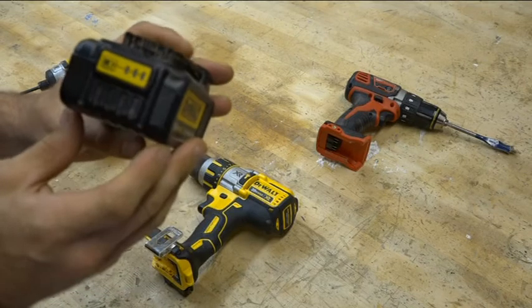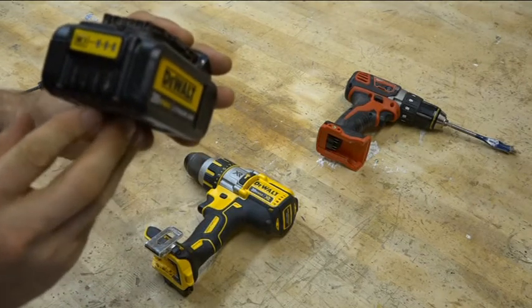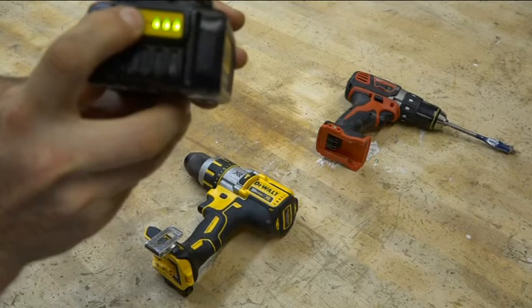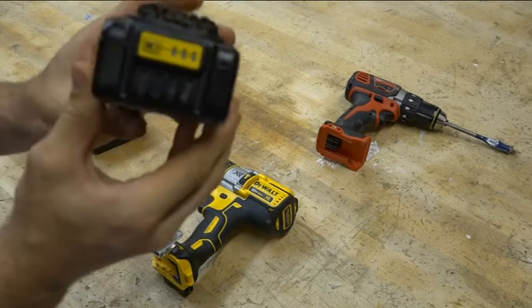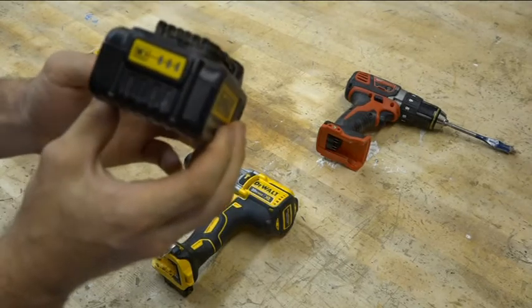Newer batteries will also have an indicator that tells how charged the battery is. Try not to let the battery sit in the direct sunlight as they will not charge when they get too hot.